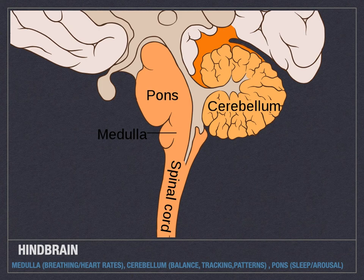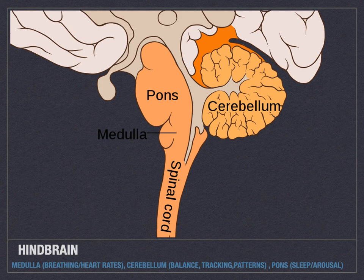The cerebellum is also responsible for what's called tracking. Tracking is the ability — if you've ever played catch — to determine how fast something is coming at you, what the angle is, and where you need to move your hands to catch it. A cerebellum would be very important for wide receivers like Antonio Brown, Michael Thomas, or T.Y. Hilton of the Colts. Those guys need to measure all those variables to figure out where to put their hands to catch footballs on Sundays.